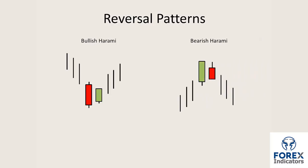The bearish harami, on the other hand, you'll see at the higher levels of the market. The bullish candle prints, then the second candle comes in, opens and gaps down. It's showing a tail that almost pushes up to the close of the previous candle. Market then pushes down, sellers come in, and the market closes lower than its open but within the bounds of the setup candle.